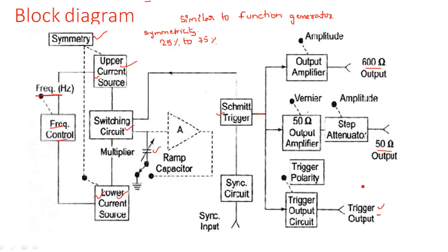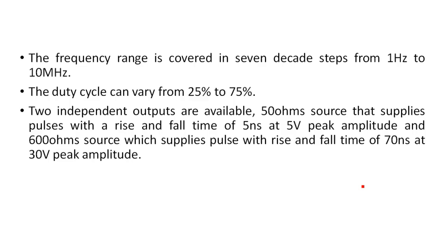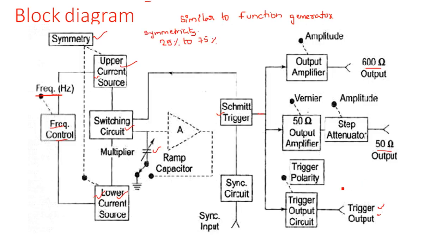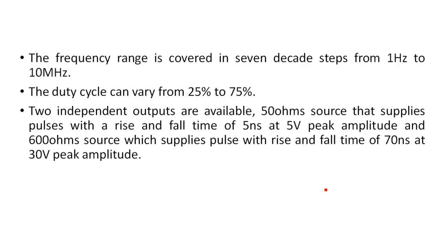Now let us see what the basic generating loop is and how it generates the square waveform. The frequency range is covered in seven decade steps. The frequency control knob allows the frequency to be varied from 1 Hz to 10 MHz in seven different decade steps. The duty cycle varies from 25 percent to 75 percent. Two independent outputs are available: one with 50 ohms output impedance and one with 600 ohms output impedance.